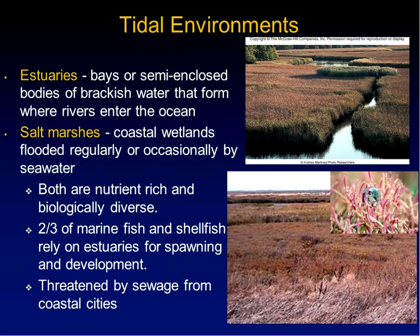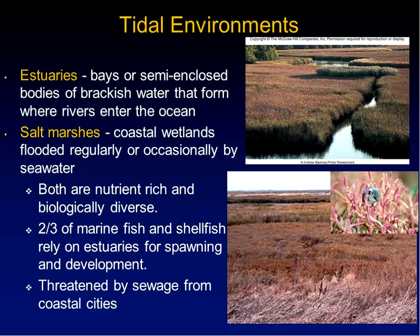Estuaries are bays where rivers empty into the sea, so there's a mix of freshwater and saltwater. Salt marshes are shallow wetlands flooded regularly or occasionally by seawater and occur on the coastlines. These areas are usually calm, warm, and nutrient rich, and biologically diverse and productive. The rivers running into the estuaries provide nutrients and sediments, and a muddy bottom as you approach the river supports emergent plants. Estuaries tend to support a whole host of other life forms including crustaceans, crab, shrimp, mollusks, clams, and oysters.